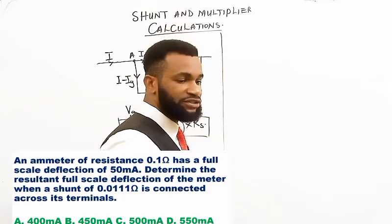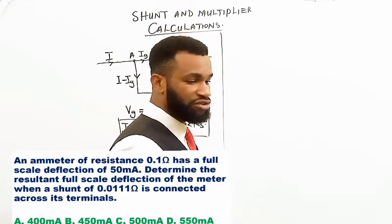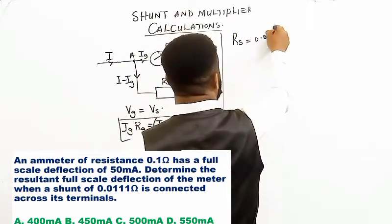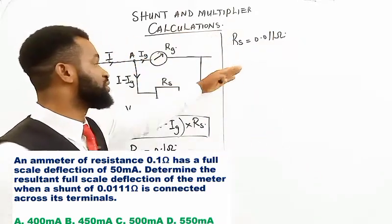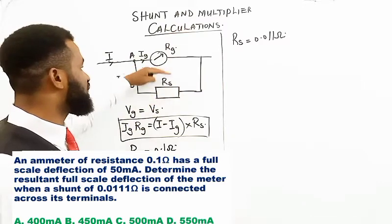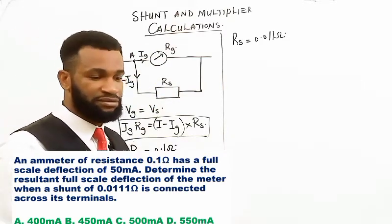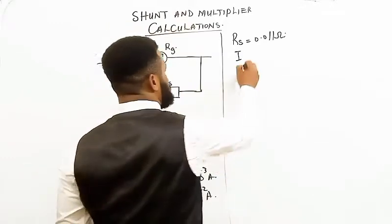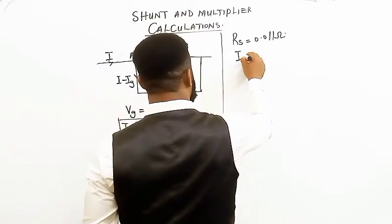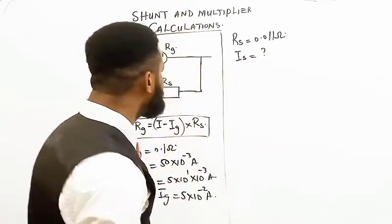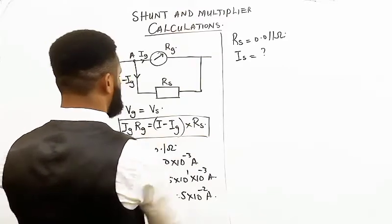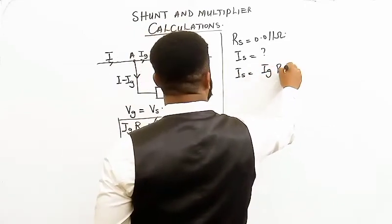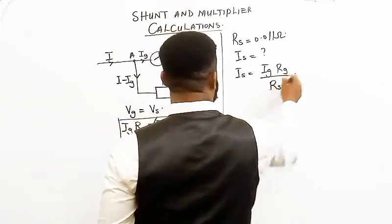We need to find the resultant full scale deflection when a shunt of Rs = 0.011 ohm is connected. This small resistance is connected in parallel with the galvanometer to help it measure higher current. We apply the formula: Is = Ig × Rg / Rs.